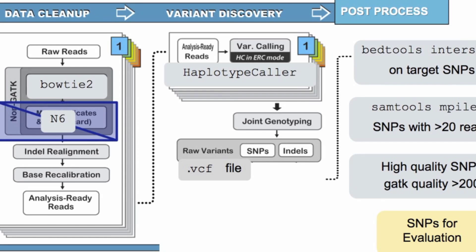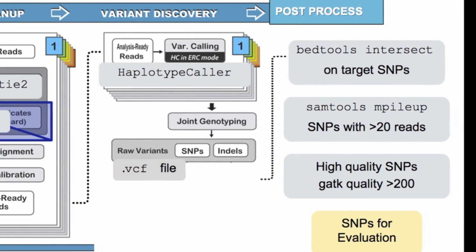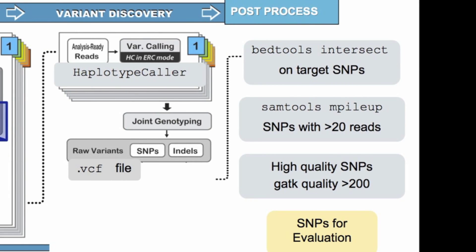The VCF file will have your final SNP calls that come out of the GATK pipeline, and from there you can post-process these variants using bedtools intersect to get only on-target SNPs, and then samtools pileup to only pull out SNPs that have enough coverage — in this case, we use at least 20 reads.